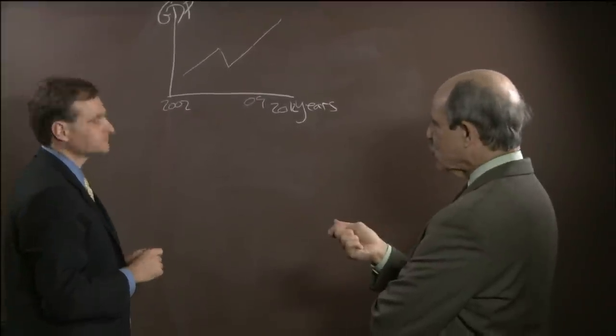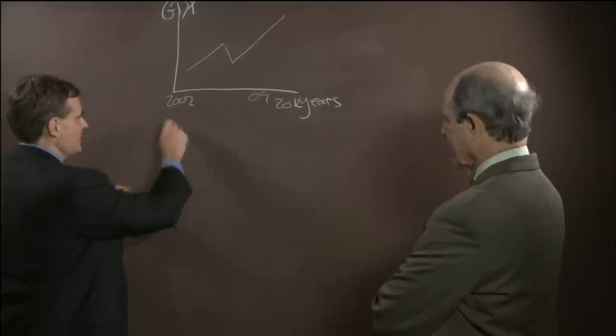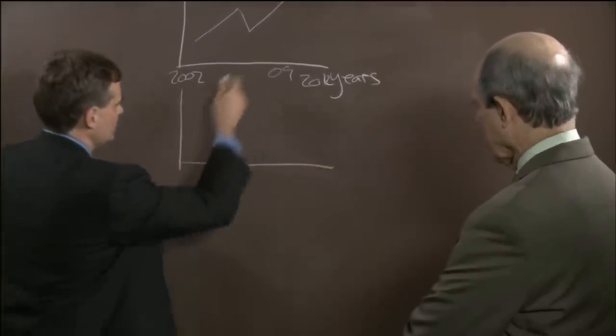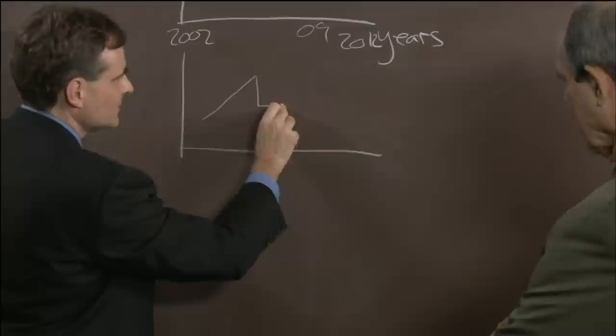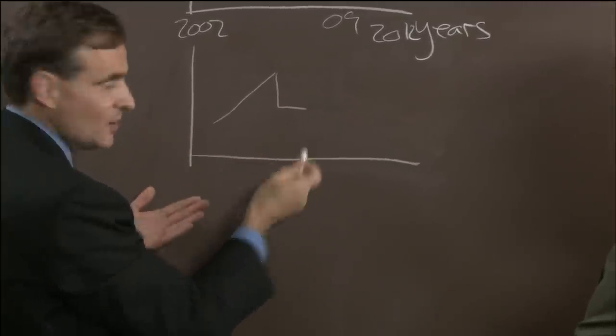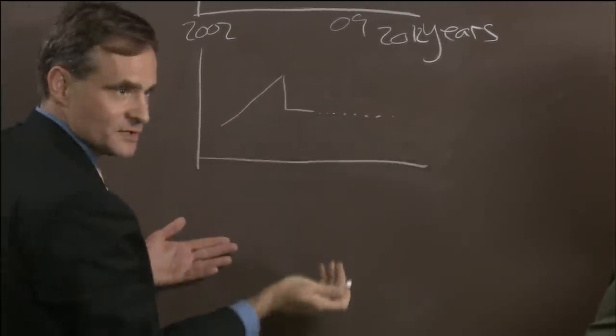PAUL SOLMAN: Now, I remember you talking a while ago about an L-shaped recovery. So what's that? SIMON JOHNSON: So, take the same space, and have the same growth ahead of time. We have a sharp collapse, and then nothing happens. No growth. How long does that go on?